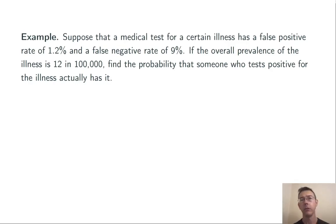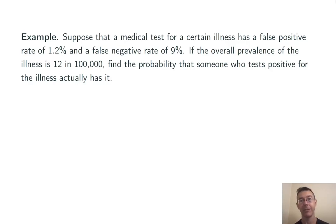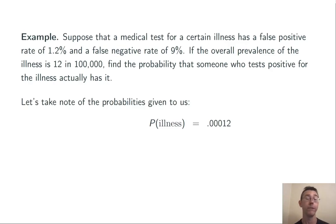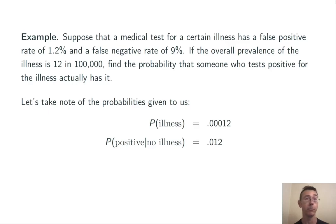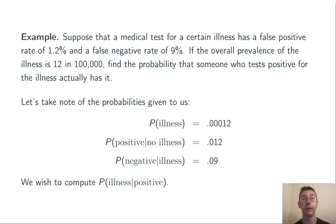Let's do an example. Suppose that a medical test for a certain illness has a false positive rate of 1.2% and a false negative rate of 9%. That is to say, when you don't have the illness, the test will still say that you do 1.2% of the time, and when you do have the illness, it will still say that you don't 9% of the time. If the overall prevalence of the illness is 12 in 100,000, find the probability that someone who tests positive actually has the illness. The probability of having the illness when someone is selected at random is 0.00012. The false positive rate — the probability of testing positive when you do not have the illness — is 0.012. The false negative rate — the probability of testing negative given that you do have the illness — is 0.09. We'd like to find the probability of having the illness given that you've tested positive.